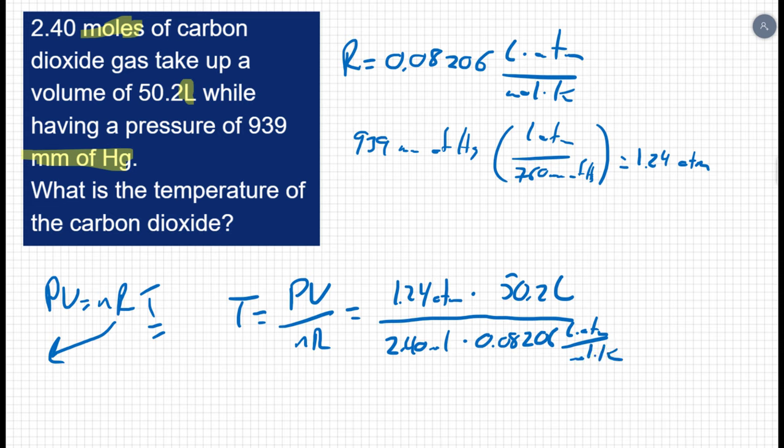Check our work. Atmospheres cancel. Liters cancel. Moles cancel. I'm left with 1 over 1 over kelvin, which is the same thing as kelvin. As I'm solving, I'm making sure again to divide the entire top by the entire bottom of my fraction.